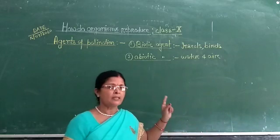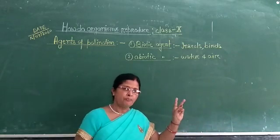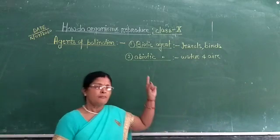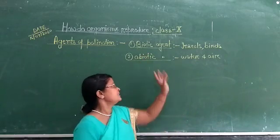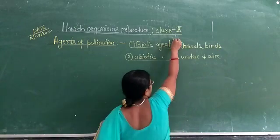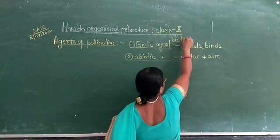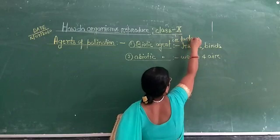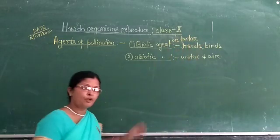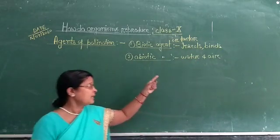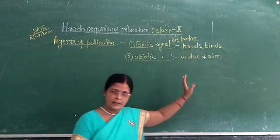So to summarize, the agents of pollination are: biotic factors such as insects and birds, and abiotic factors such as water and air.